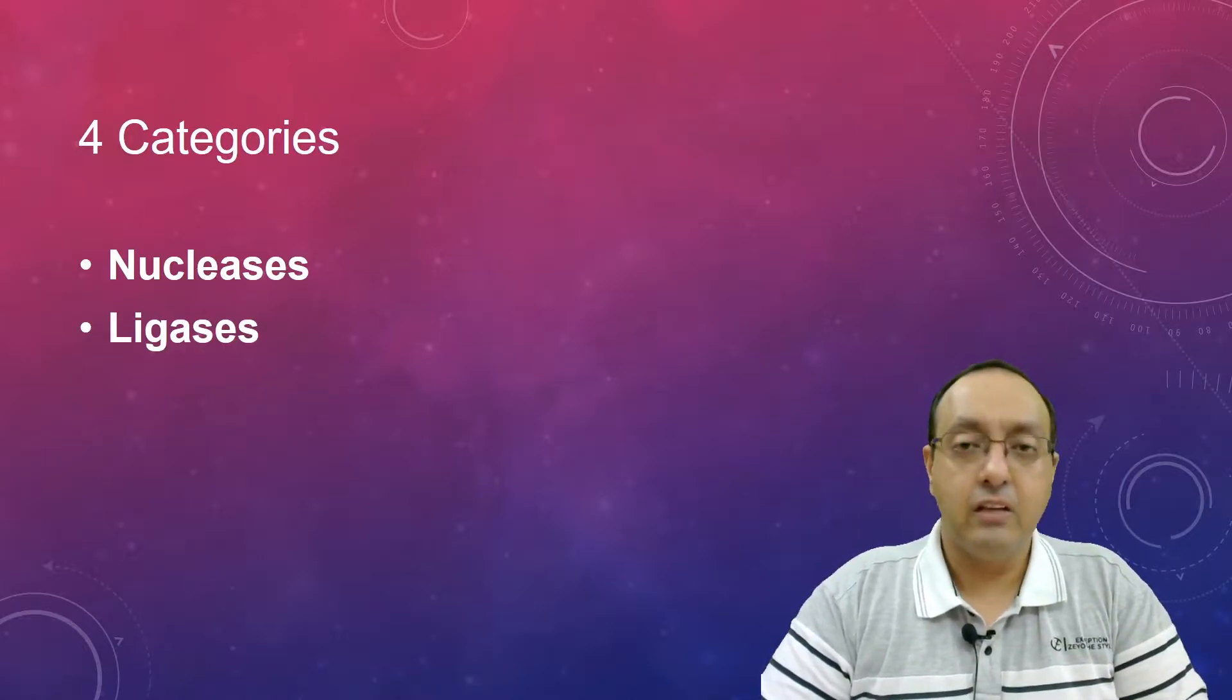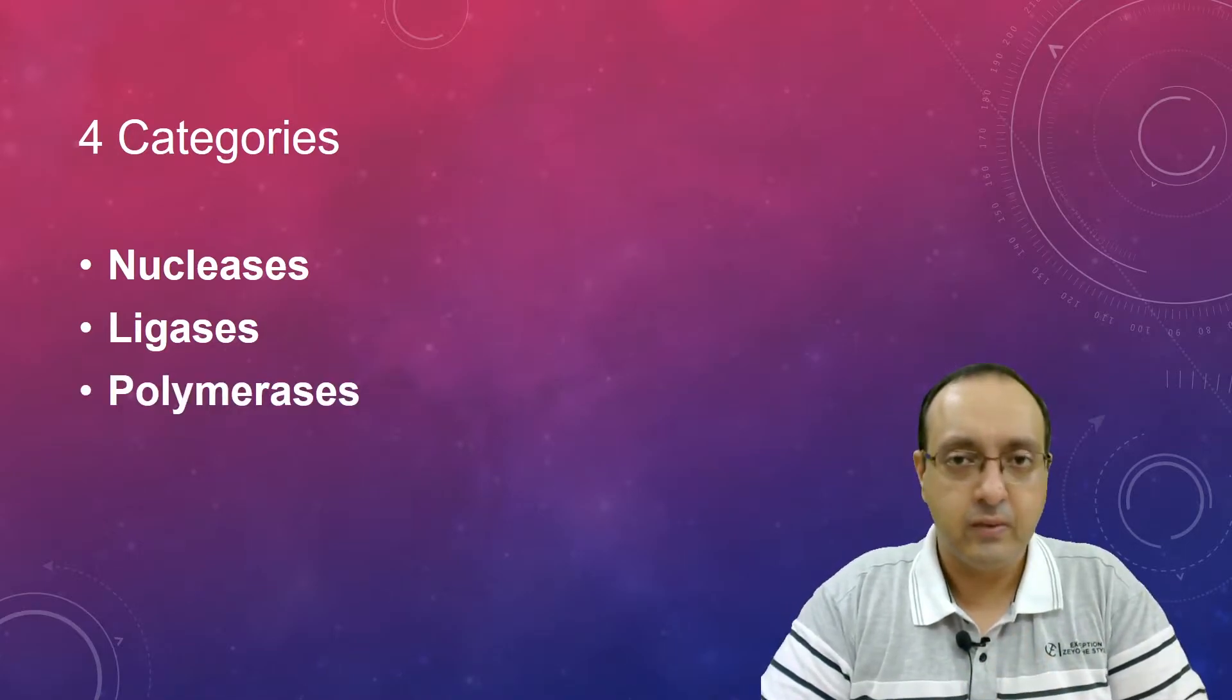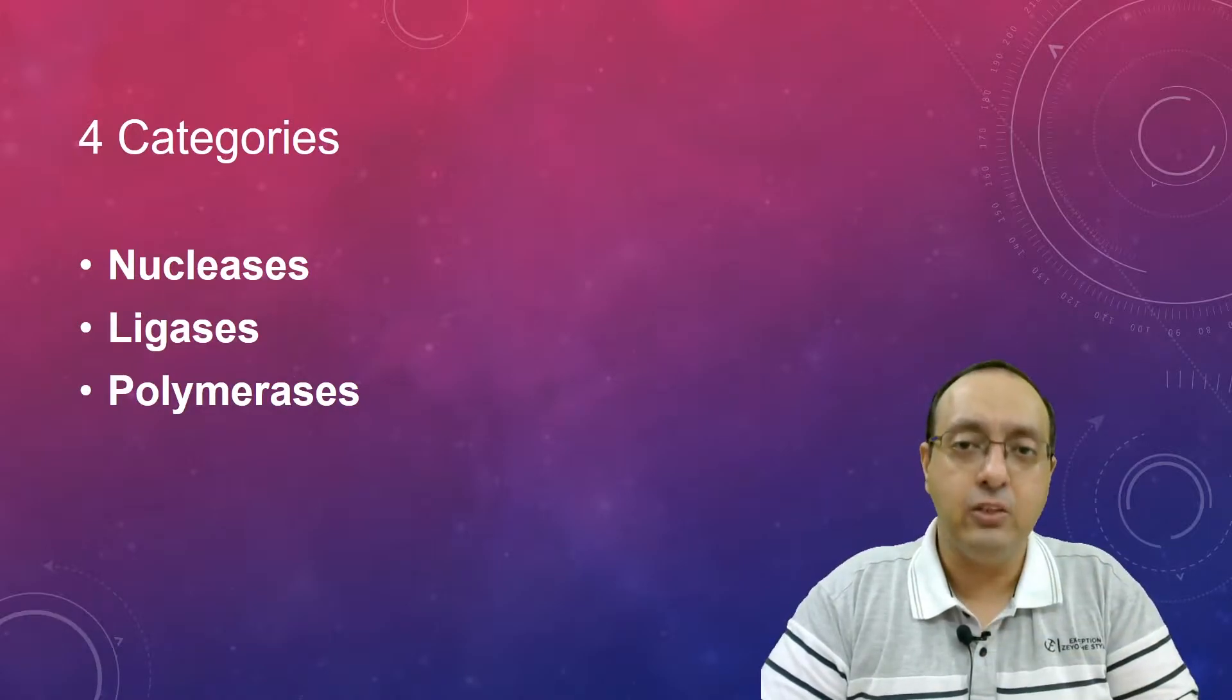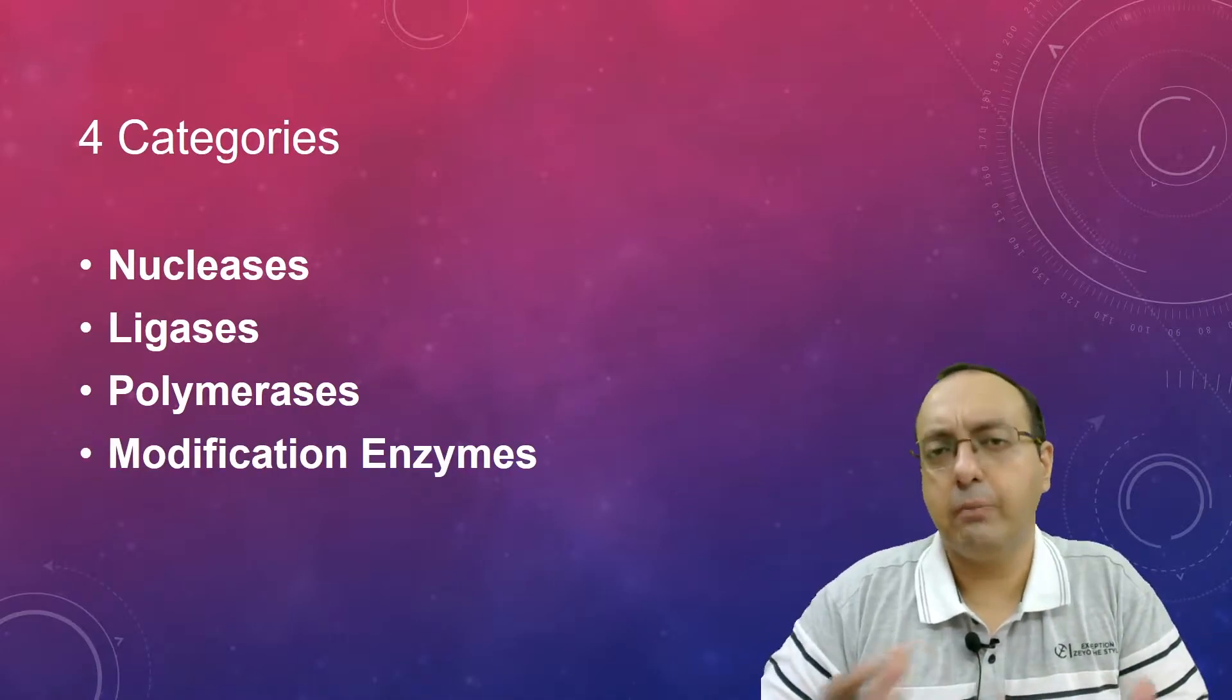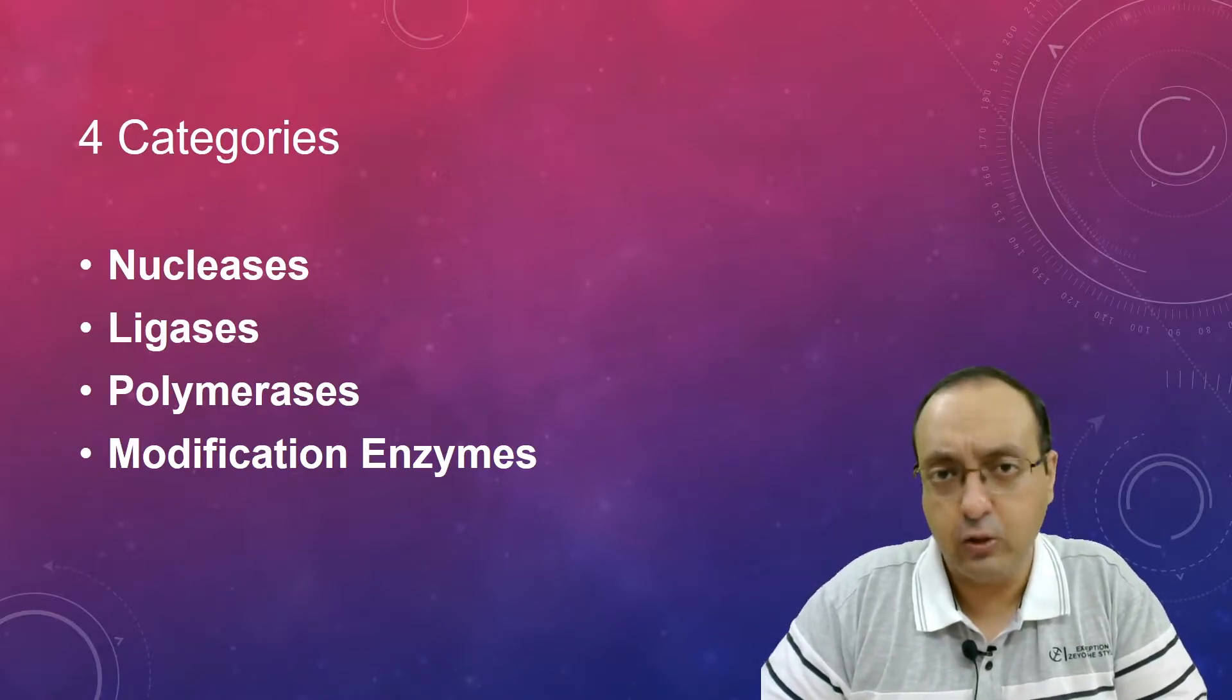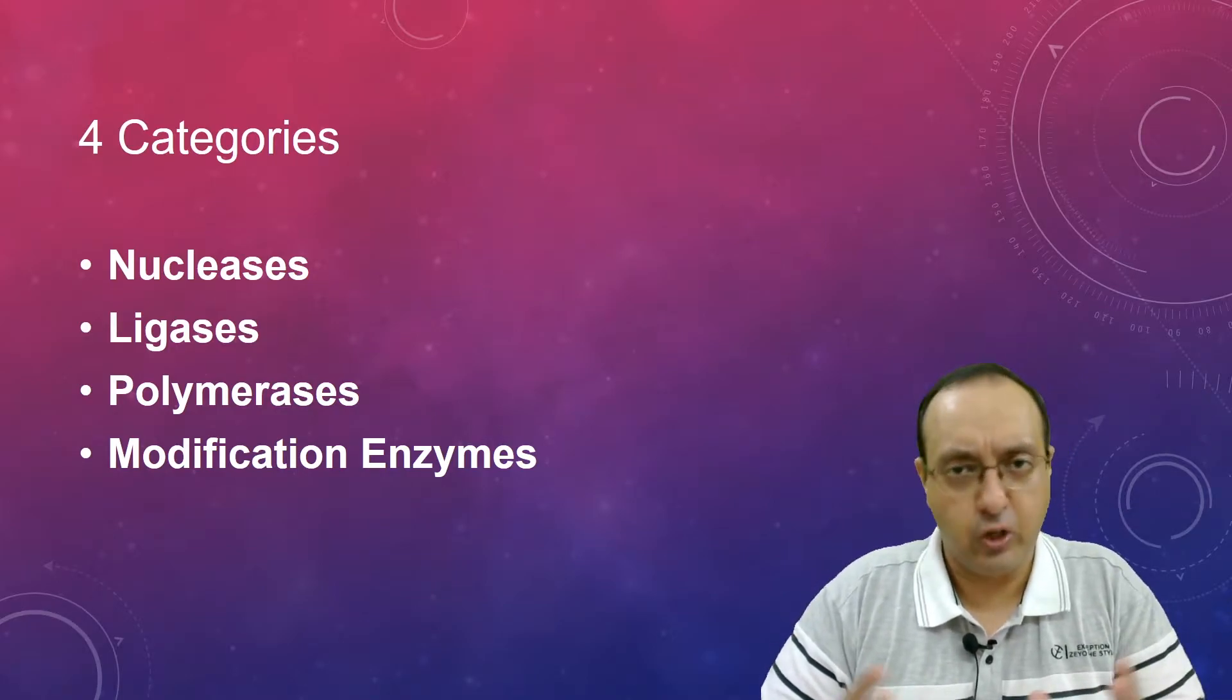There are four categories of enzymes that we will be dealing with. First are nucleases, which degrade DNA or RNA. Then we have ligases, used to join DNA or RNA molecules. Then we have polymerases which are helpful for making new DNA or RNA, either single-stranded or double-stranded. And lastly we have modification enzymes, typically used to either remove phosphate groups, add phosphate groups, or add methyl groups to DNA or RNA molecules to help in their cloning or analysis.